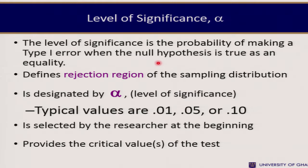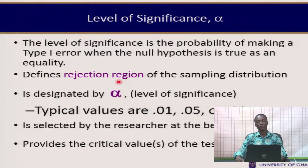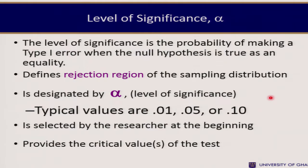The level of significance is the probability of making a type 1 error when the null hypothesis is true. This alpha defines what we call the rejection region of the sampling distribution. Common values used to depict the level of significance are α = 0.01, α = 0.05, or α = 0.10. These alpha values are selected by the researcher at the beginning of the test.